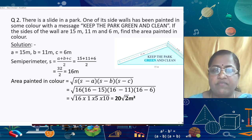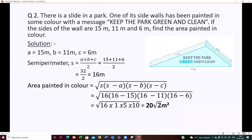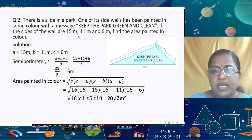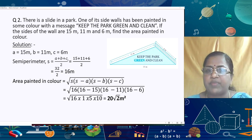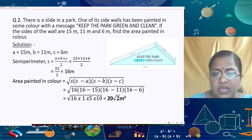In the next question, one side wall of a slide in a park has been painted with the message 'Keep the park green.' The sides of the triangular wall are 15 m, 11 m, and 6 m. Find the area painted. Here a = 15 m, b = 11 m, c = 6 m. The semi-perimeter s = (15 + 11 + 6)/2 = 32/2 = 16 m.